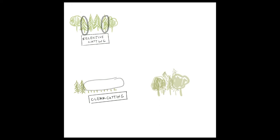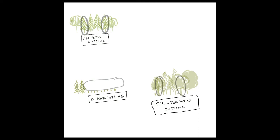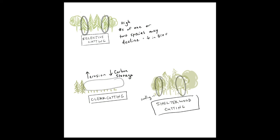In selective cutting, the downside is it can decrease biodiversity. In clear cutting, the terrible thing is it leads to erosion — any rain event or wind will wipe the topsoil away. It also depletes what would have been great carbon storage. The cool thing about shelter wood cutting is it considers the lifespan of different tree species.